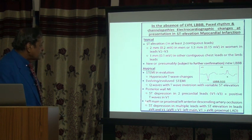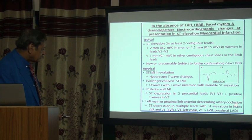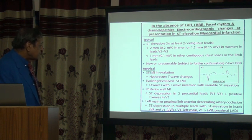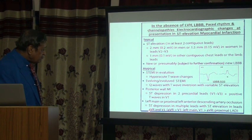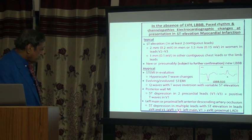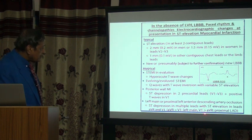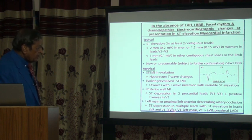A very important point: if you find left main or proximal left anterior descending artery occlusion, ST depression in multiple leads will be seen with ST elevation in leads AVR and V1 only. You may see depression everywhere but you find ST elevation in AVR or V1 — this is STEMI, not non-STEMI. If AVR elevation is more than V1, then left main is occluded. If V1 is more than AVR elevation, then proximal LAD is involved.